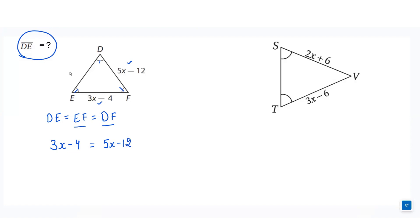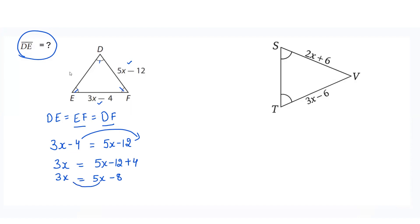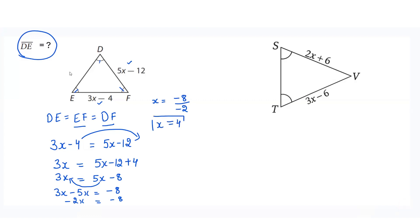We will take the variables to one side and the numbers to the other side. So 3x equals 5x minus 12 plus 4, giving us 3x equals 5x minus 8. Now we take the variable to the other side: 3x minus 5x equals minus 8, so minus 2x equals minus 8, and x equals minus 8 over minus 2, which equals 4. That is the value of x.